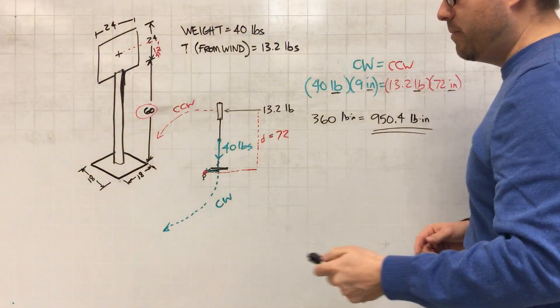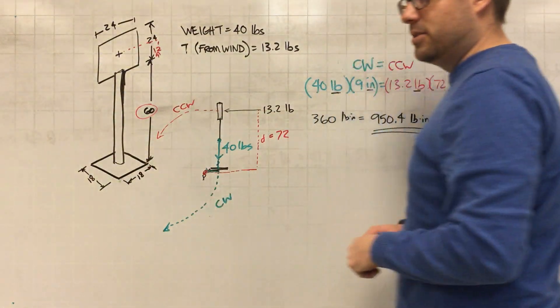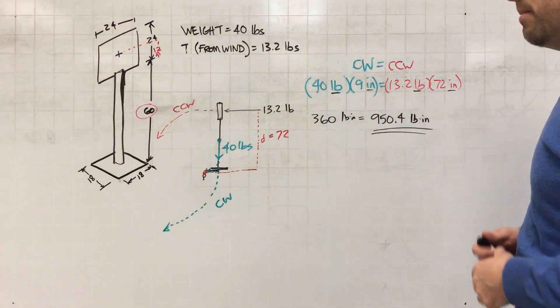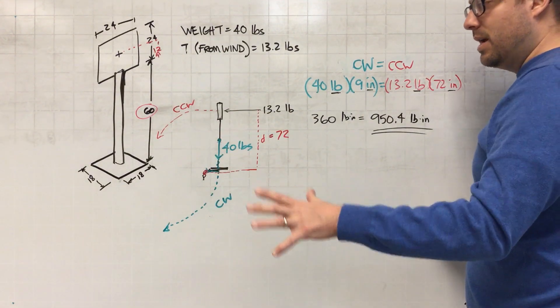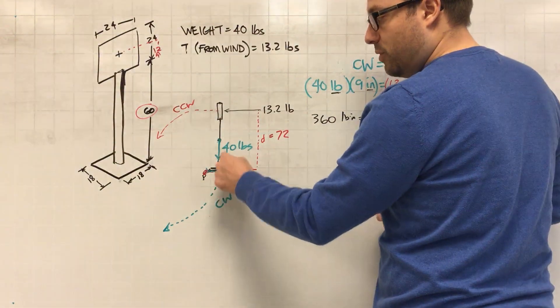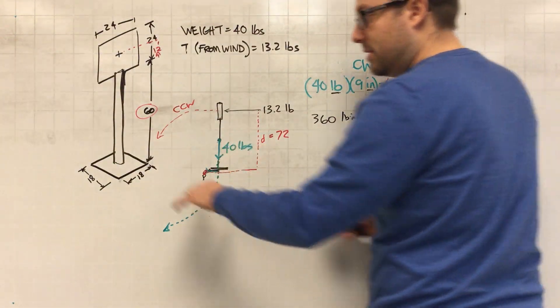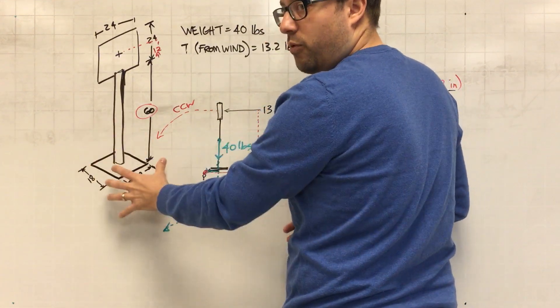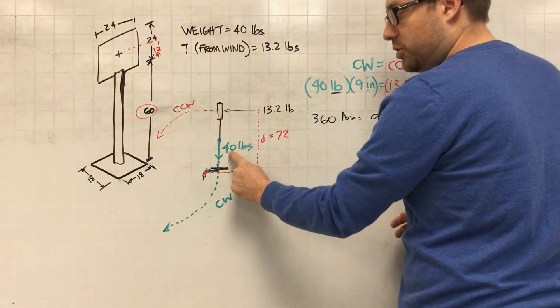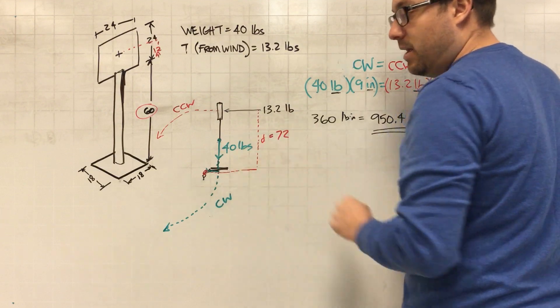The question now is can we add some sandbags to the bottom, and if so, how many pounds worth of sandbags do we need? So in other words we are not changing anything about where the force is applied. We're going to assume that the sandbags are distributed evenly so we have a symmetrical force at the bottom. What we're doing is we're changing that 40 by adding sandbags, we are adding weight.